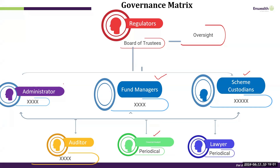Then you have an investment account administrator who is independent. Both of these institutions report to the trustees of the endowment periodically on a quarterly basis. You can also have a lawyer who works on governance, secretarial, and compliance matters, and an auditor who audits the endowment annually.